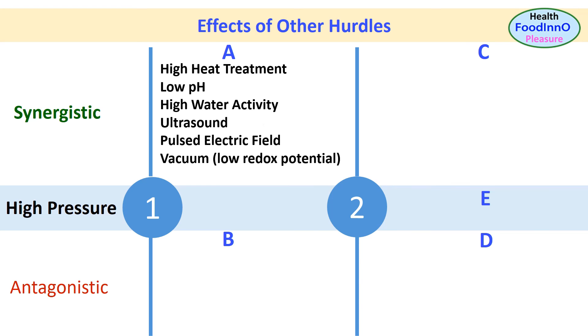In group 1A, the listed hurdles work as synergistic. These are high heat, low pH, high water activity, ultrasound, pulsed electric field, and vacuum, that is low redox potential.